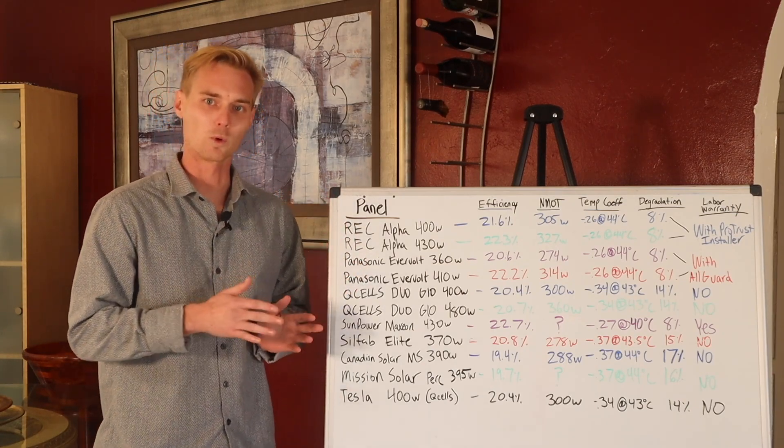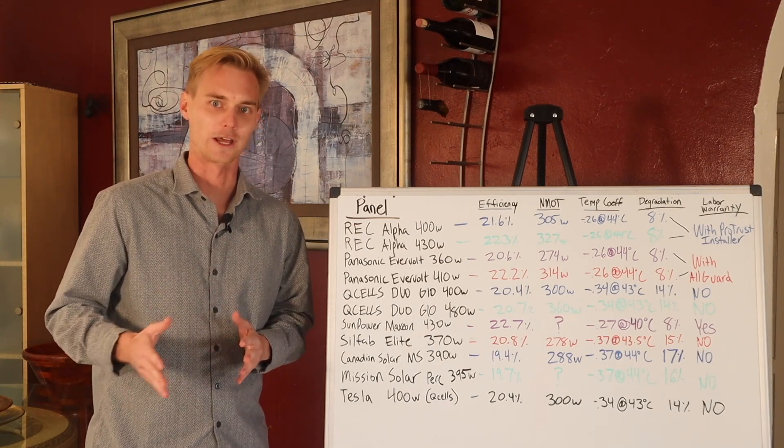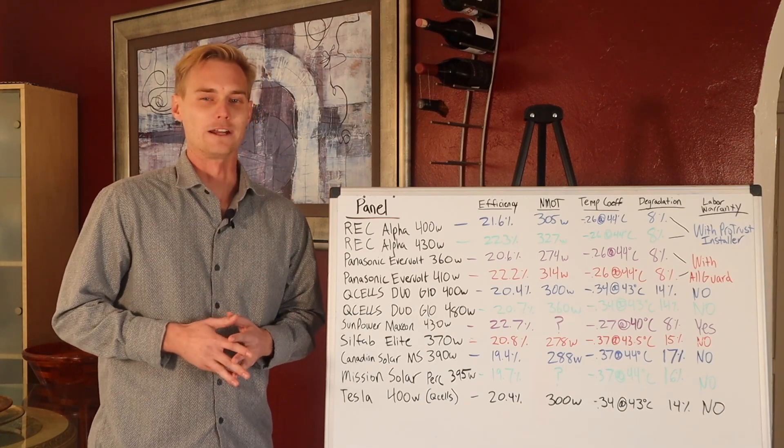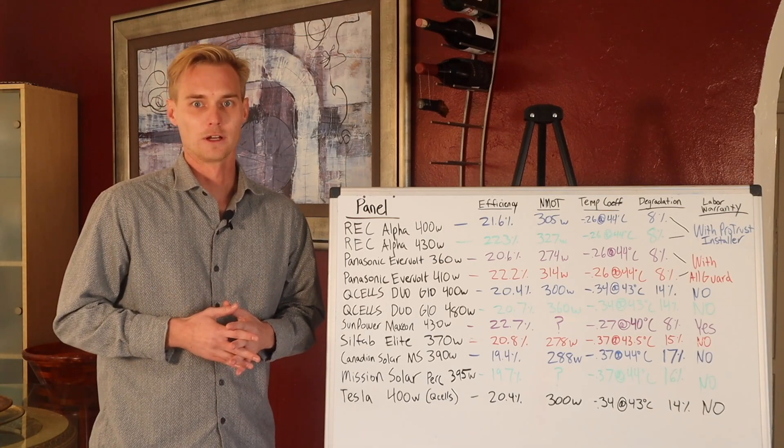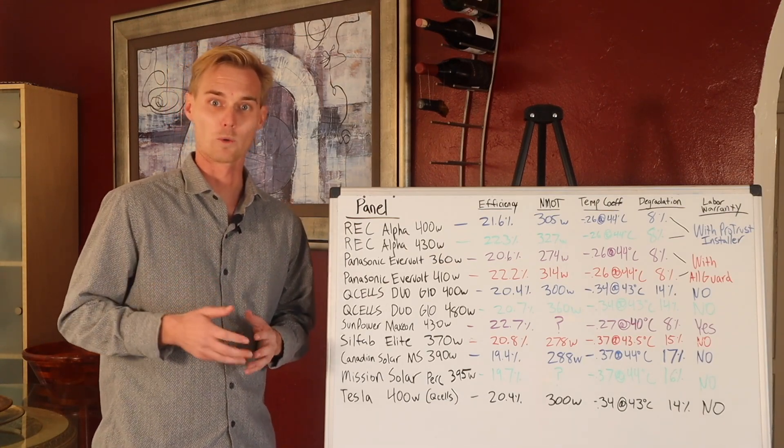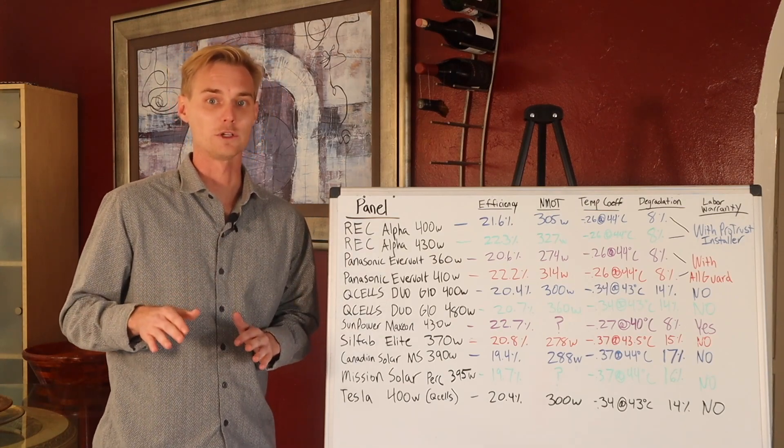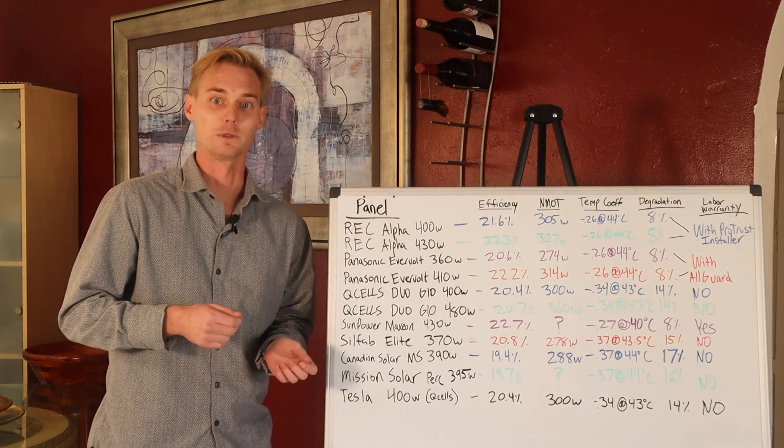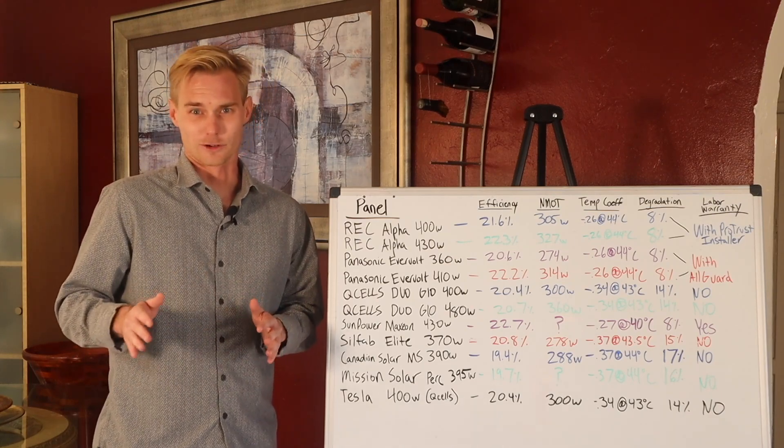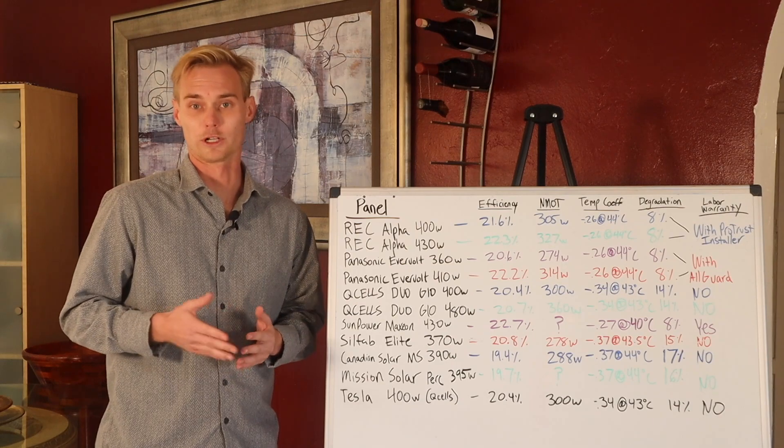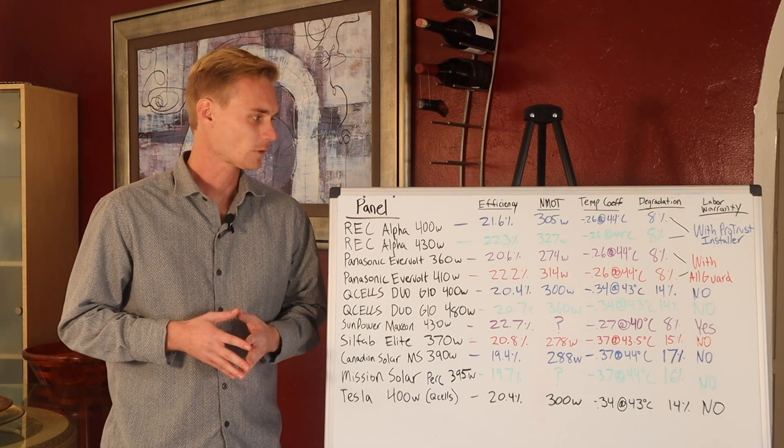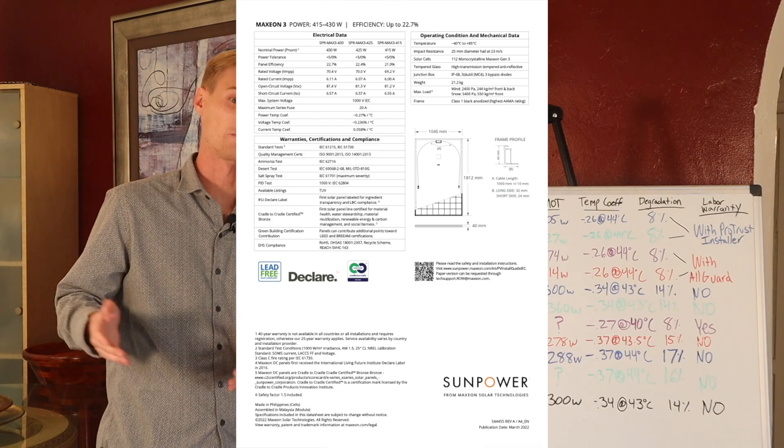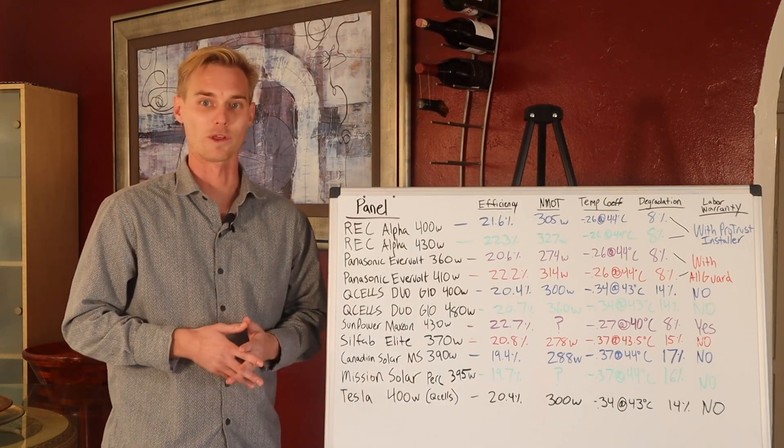The efficiency is the number one most important rating you need to understand. The general rule of thumb is anything over 20% is going to be considered really good. Anything under 20% is kind of mediocre nowadays. Some panels are even over 21%, even over 22%, and those are your super premium modules. The Panasonic, RECs, and Sunpowers are the most efficient panels on the market.